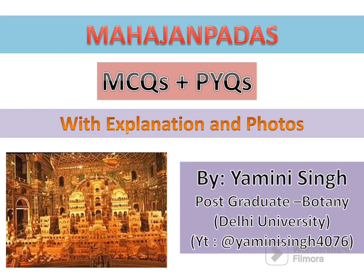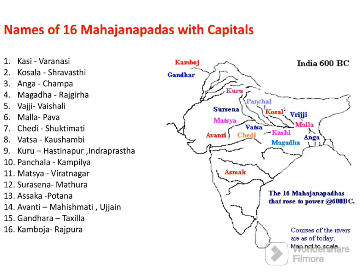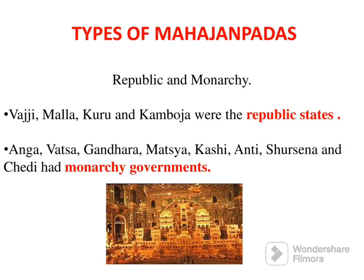In order to understand this topic and to solve the MCQs, we need to know how many Maha Janpads there were, and their present location and capitals. Here you can see 16 Maha Janpads' capitals and locations — for example, Kashi's capital is Varanasi.